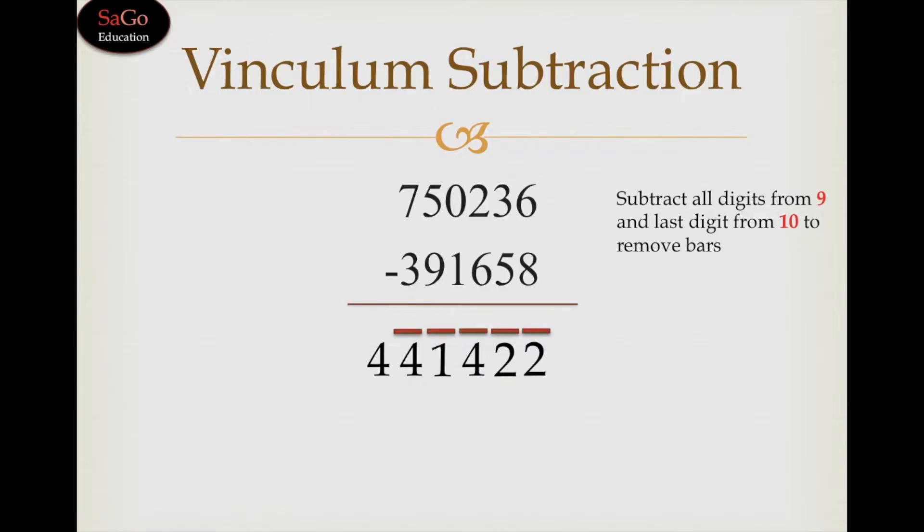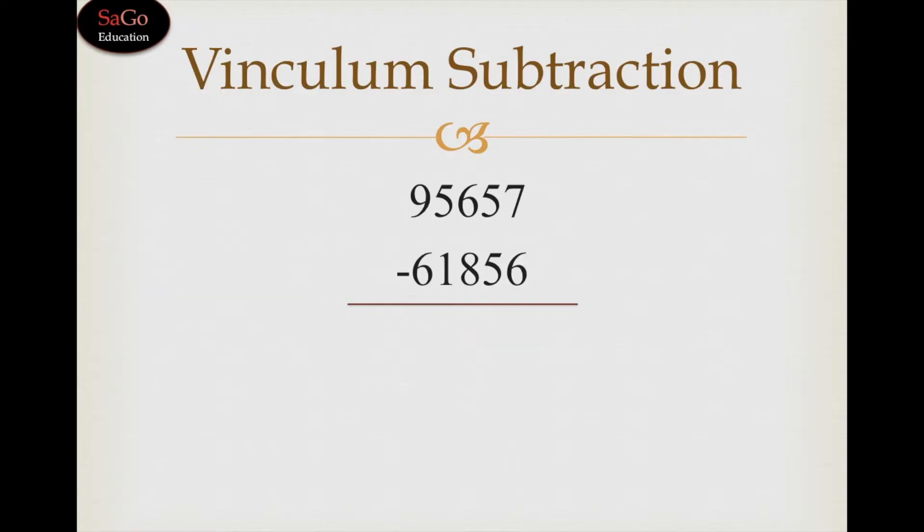10 minus 2 is 8, write 8. And all the digits from 9: 9 minus 2 is 7, write 7. 9 minus 4 is 5, write 5. 9 minus 1 is 8, write 8. 9 minus 4 is 5, write 5. And the leftmost digit where there is no bar above it, which is 4, we need to write the predecessor of the leftmost digit. The predecessor of this 4 is 3, write 3. So the answer is 358578.